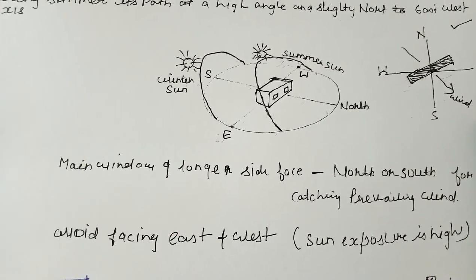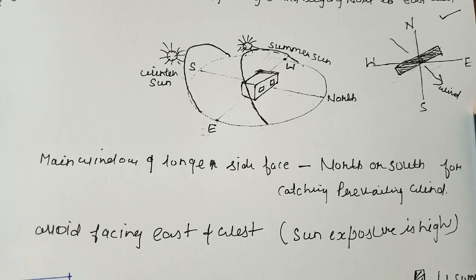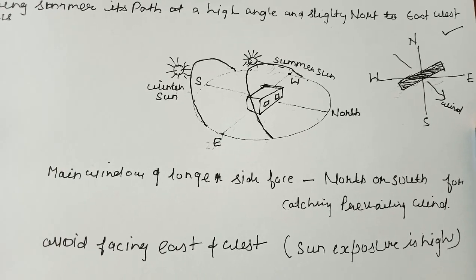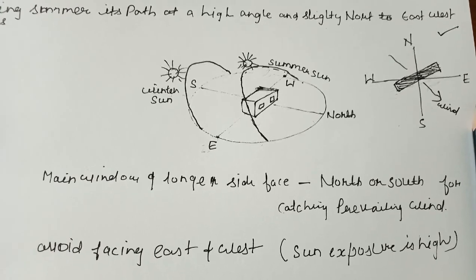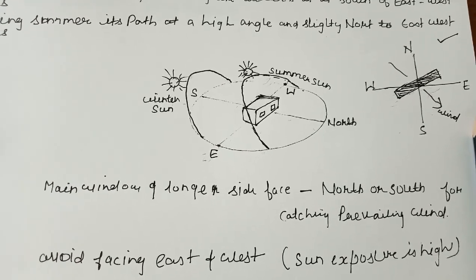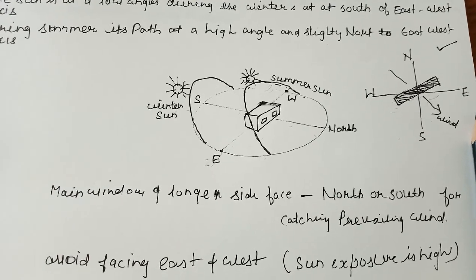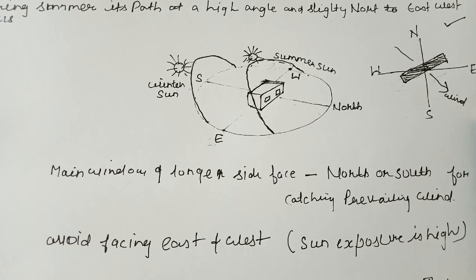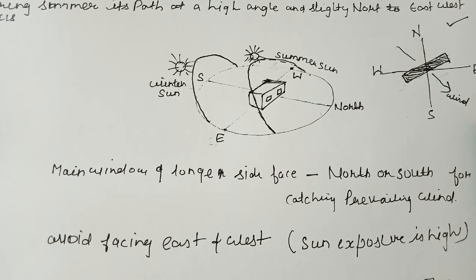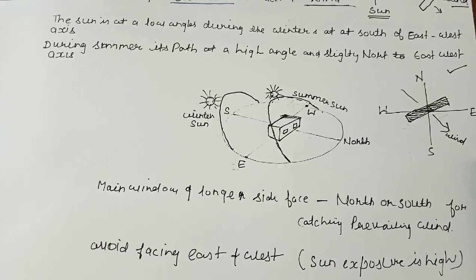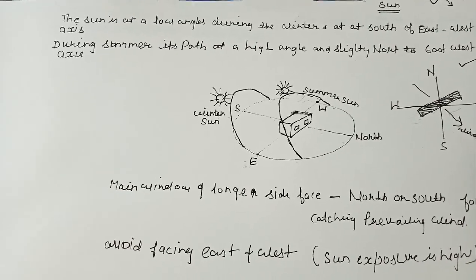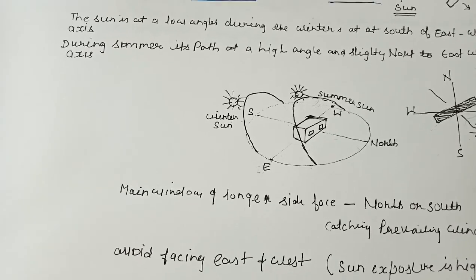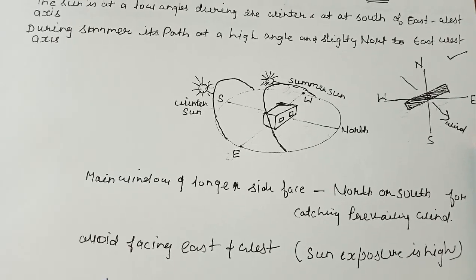Key measures include having the main window and longer side face north or south for catching the prevailing wind. We provide big windows to the north and south to catch the wind, and we avoid east and west facing because sun exposure is greater there. For composite climates, we must receive the welcoming sun in winter while avoiding it simultaneously during summer.